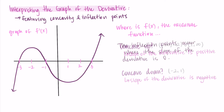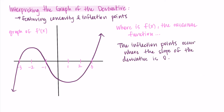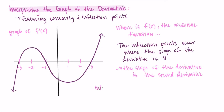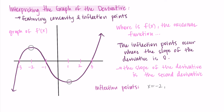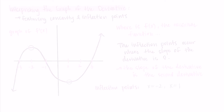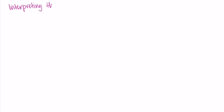We can also ask where the inflection points occur. Inflection points occur where the second derivative is equal to zero or is undefined. We're thinking of the second derivative as the slope of the derivative function, so we're looking for where the slope of this graph is zero. There are two places where the slope is zero: at x equals negative 2 and x equals 1. So these are the inflection points of the original function. The maximums and minimums on the graph of the derivative are the inflection points for the original graph — pretty cool, though it can take a few revisits before it really feels solid.